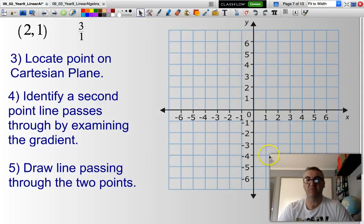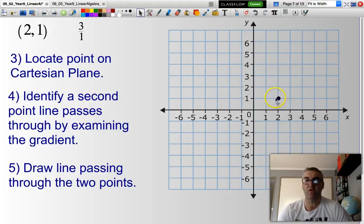Here is my Cartesian plane. Now, I need to locate the point 2, 1 on the Cartesian plane and draw a little dot there. There you go. X is 2, y is 1.